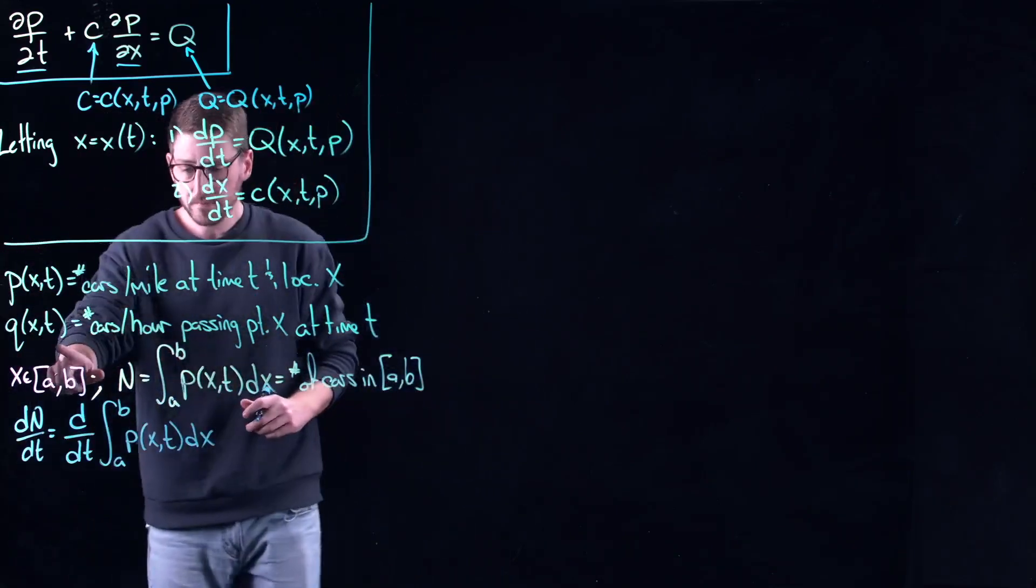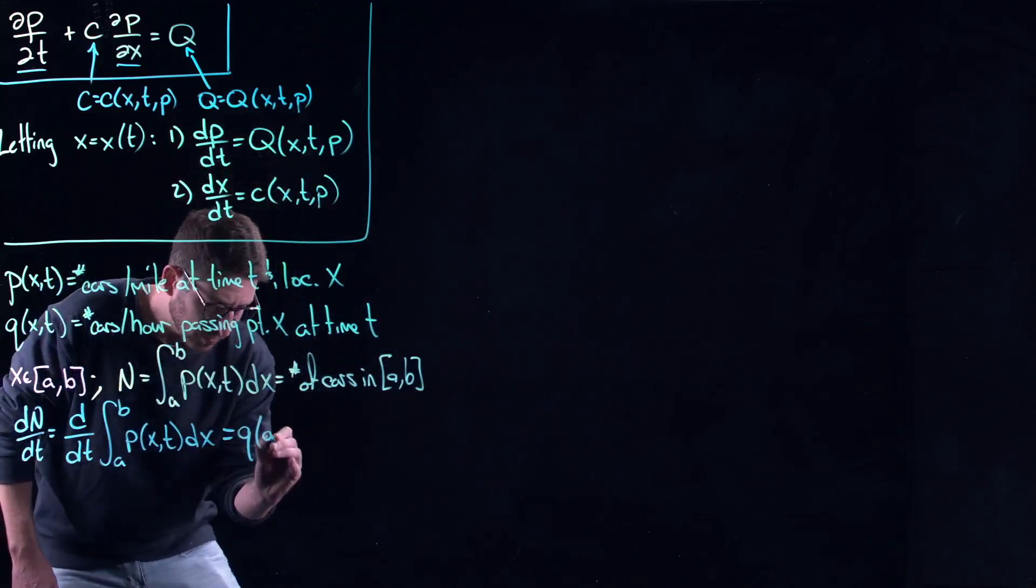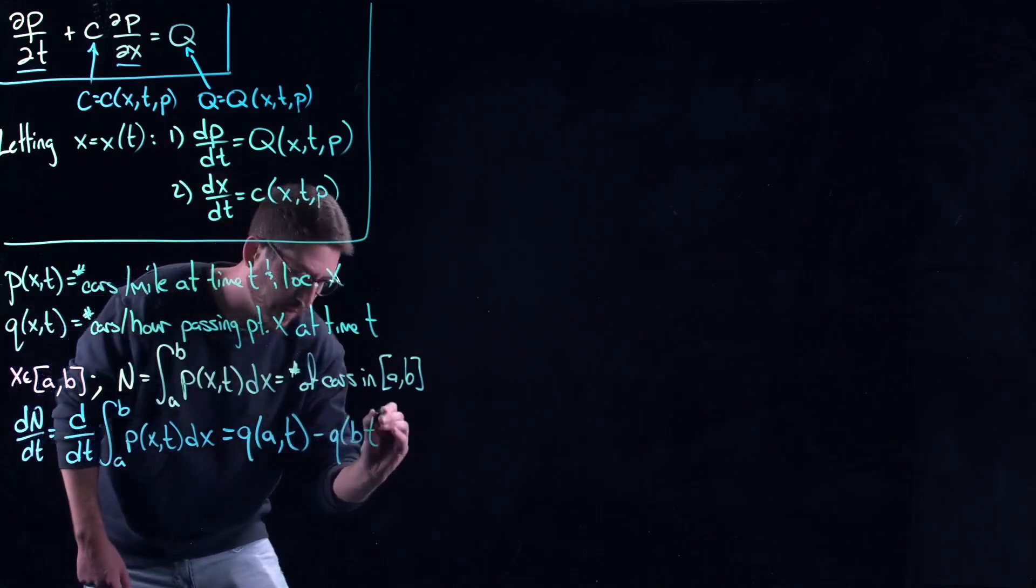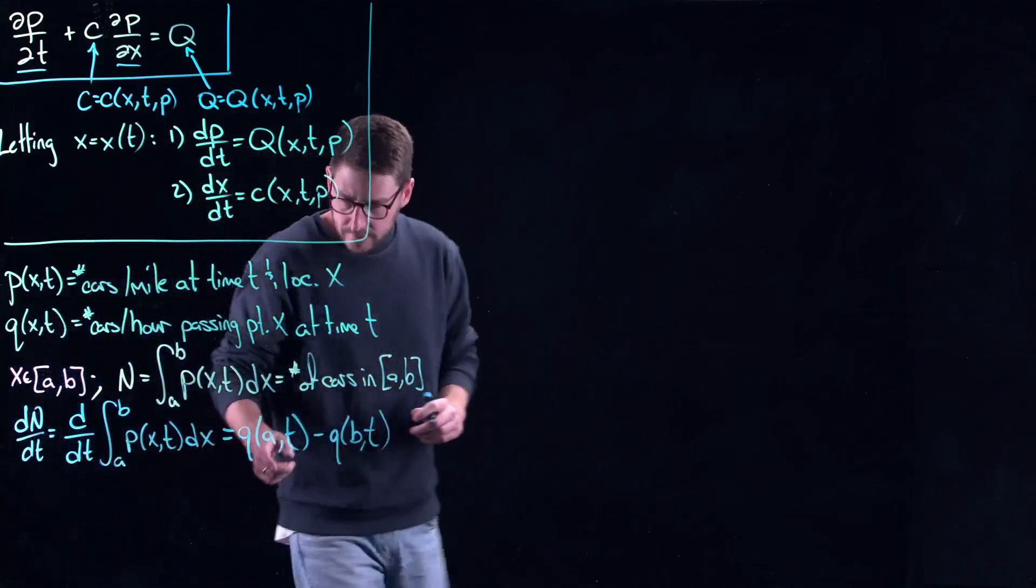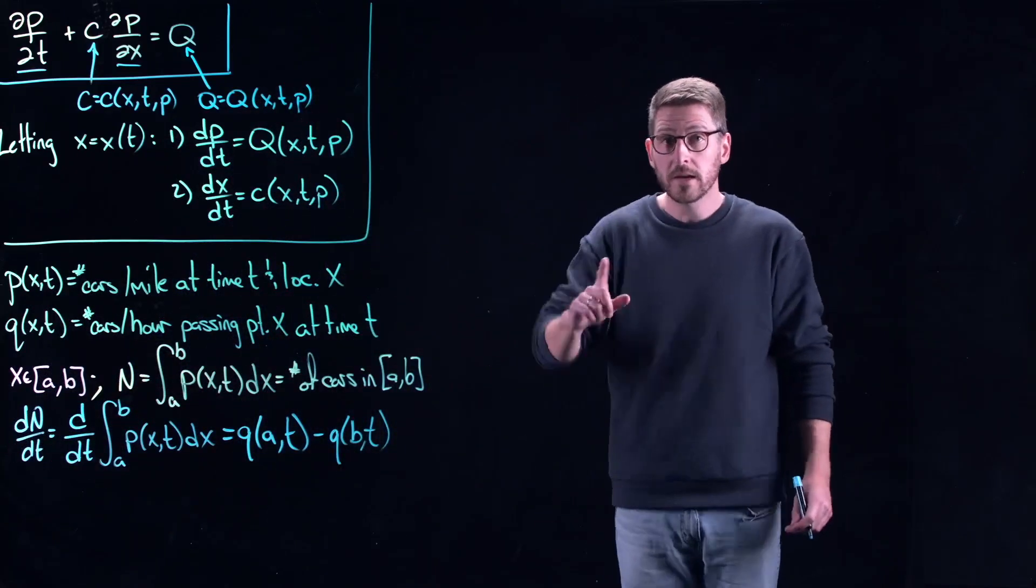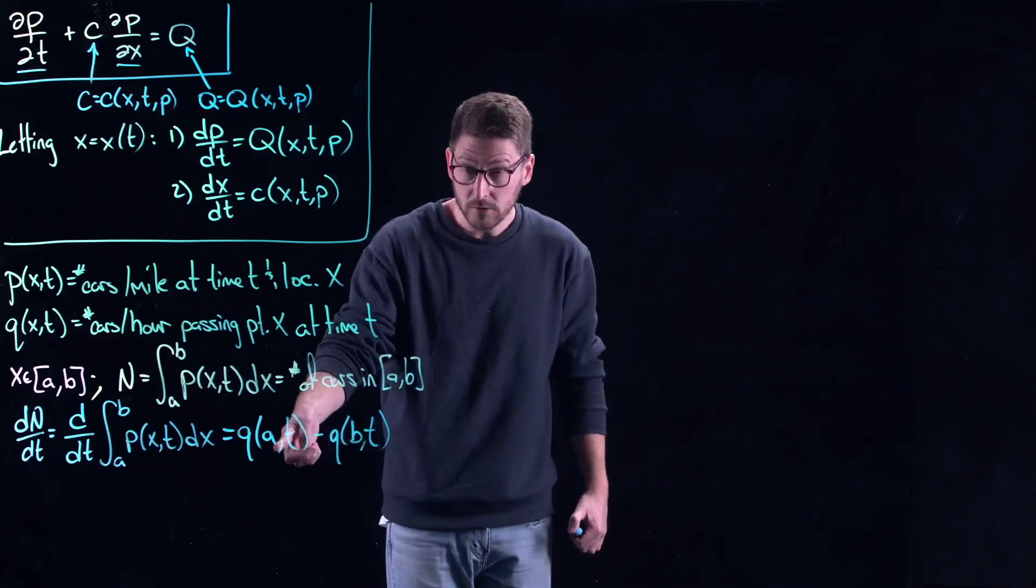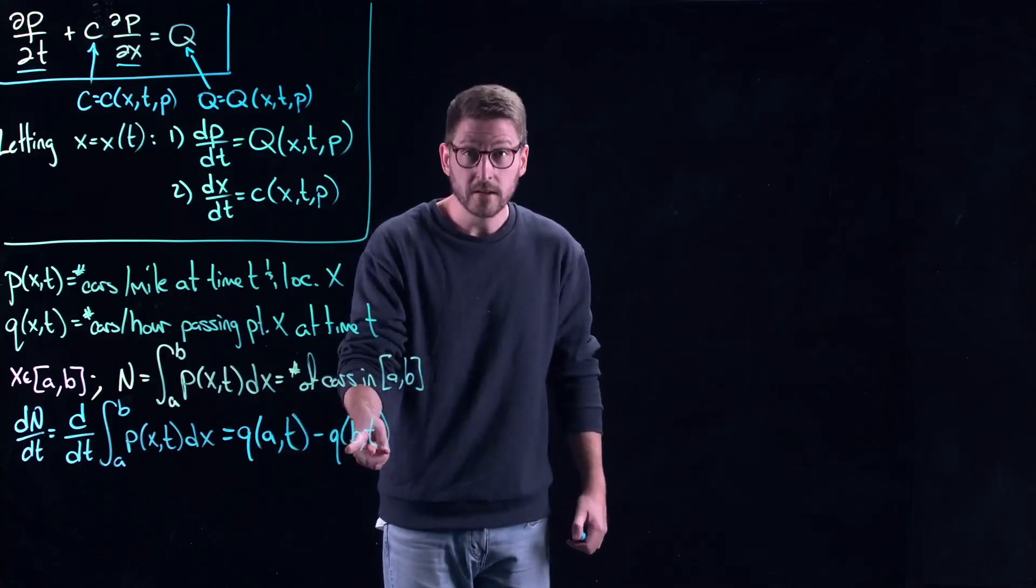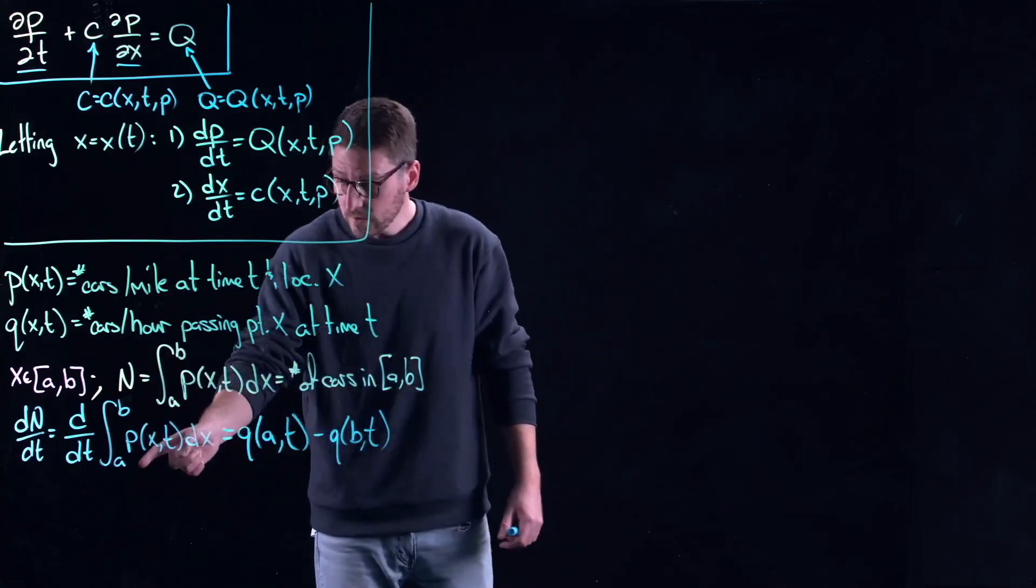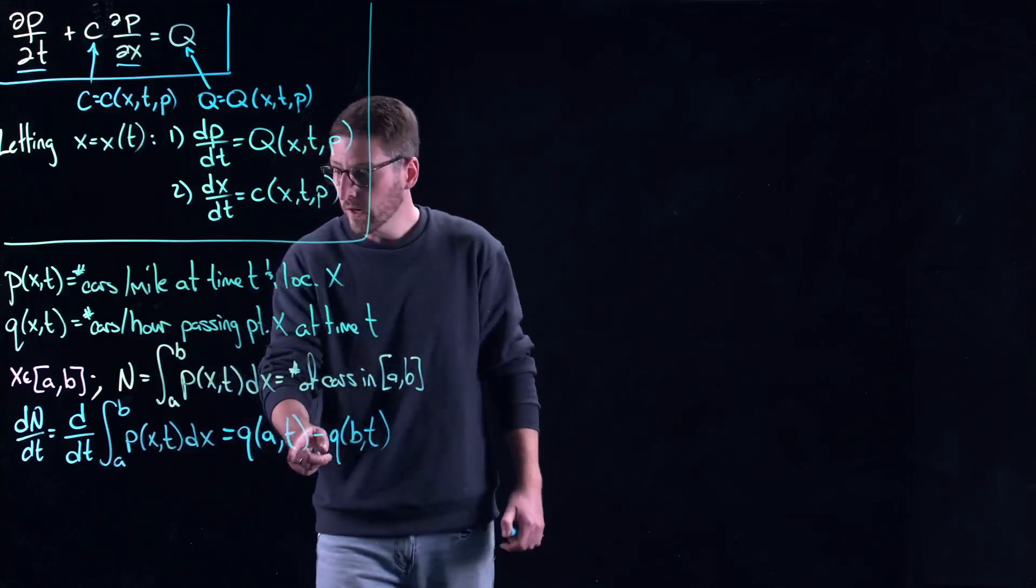This would be the derivative of this integral by definition. But at the same time, this is also equal to Q of A at time t minus Q of B at time t. That's because the number of cars can only change by cars entering through A and exiting through B. This is the rate of cars entering through A subtracting the rate of cars exiting through B. So now you can see we have a relationship between these quantities, Q and P.